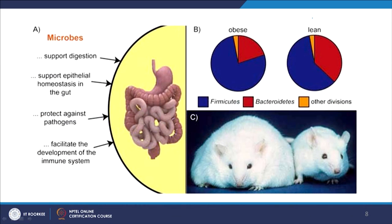Most of the studies for the human digestive system are not carried out on humans but on mice. We know that microbes support digestion because they help in fermentation, they support epithelial homeostasis in the gut, and they protect us against pathogens. If you have a rich and diverse community present in your gut and an intruding pathogen enters, there is a very high chance that the native microbial community will out-compete the pathogen and you will not have an infection. However, if because of antibiotics, discrepancy in diet, or other environmental stressors the microbial community has become weak and diversity has been lost, then a pathogen has a higher chance of colonizing your intestine. Gut microbes also help us develop a better immune system.